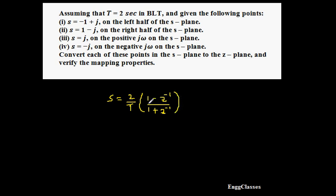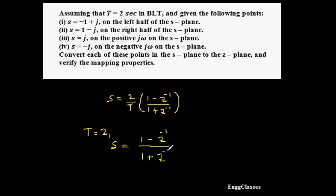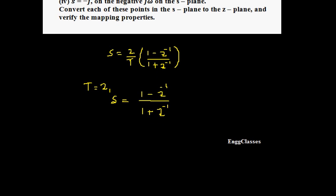We are already aware of this, and there is one separate video on how we get this expression — I recommend you watch that video and come back. Now, since T is equal to 2, the expression gets reduced: s equals (1 minus z-inverse) divided by (1 plus z-inverse). But the task is to find the expression for z, so let me rearrange this expression in terms of z.